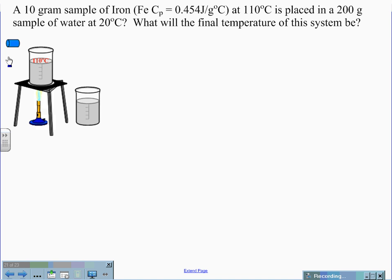Here we have a setup where we are going to heat up water to 110 degrees Celsius and place a piece of metal iron in this beaker of hot water. The metal has a specific heat of 0.454 joules per gram degrees Celsius. Once the metal reaches 110 degrees Celsius, we are going to transfer it over to this cool water bath of 200 grams of water at 20 degrees Celsius.